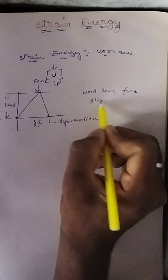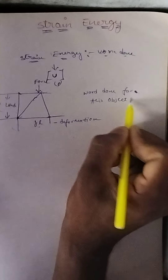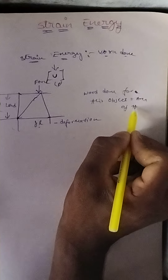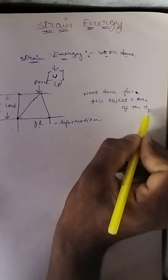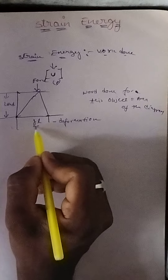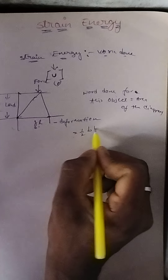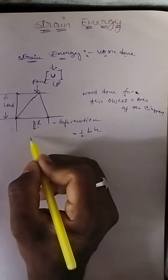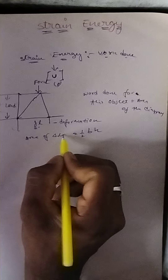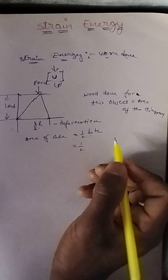The work done for this object equals the area of the diagram. Since the diagram is a triangle, we use the area of a triangle formula, which is half times base times height.